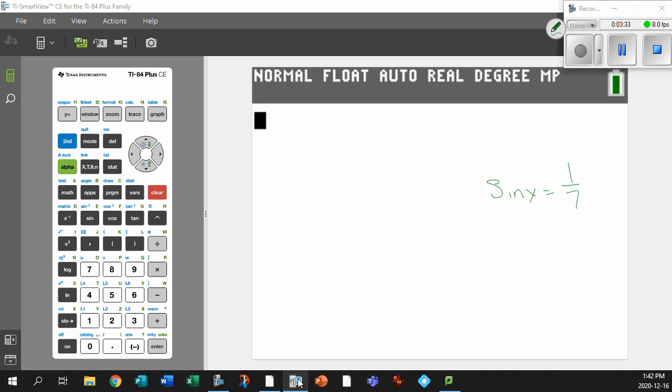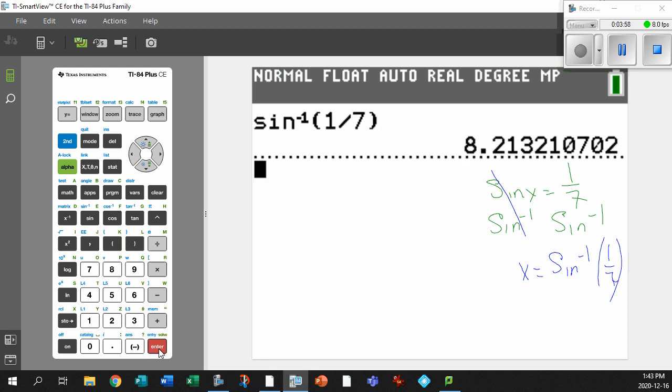And just note that we had sine x equals 1 seventh. Just like we did in math 10, we did sine to the minus 1, sine to the minus 1. That cancels everything on this side. So x equals inverse sine of 1 seventh. Perfect! Let's figure out what that is. Second inverse sine of 1 divided by 7. There's the 1 seventh. Punch it. I get 8.2 degrees.